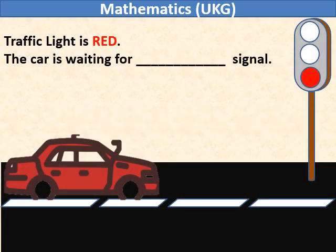Traffic light is red. The car is waiting for green signal. It is green light.